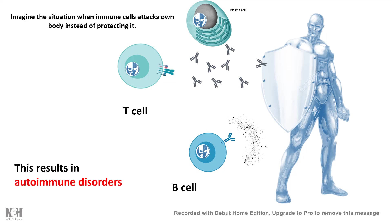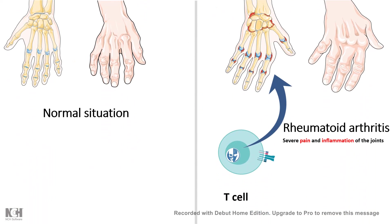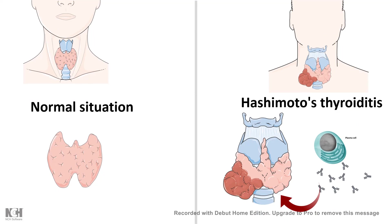In autoimmune disorders, instead of protecting us, our own immune cells like T cells, B cells, and plasma cells hit our own body. For example, in rheumatoid arthritis, autoreactive T cells consider the antigens of our body to be foreign and counter our own body, causing severe joint bends and distortion of the finger joints. Similarly, in Hashimoto's thyroiditis, autoreactive plasma cells produce autoreactive antibodies against the thyroid gland, causing depletion and severe inflammation of that tissue.